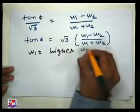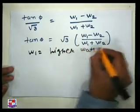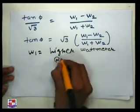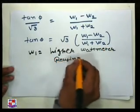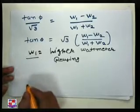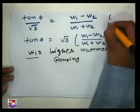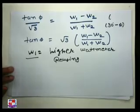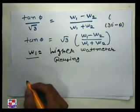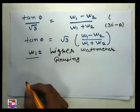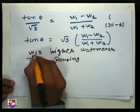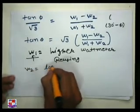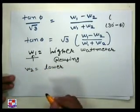When the power factor is leading, W1 will be the higher wattmeter reading, because 30 - φ is always greater than 30 + φ. So W1 will be the higher reading and W2 will be the lower wattmeter reading.